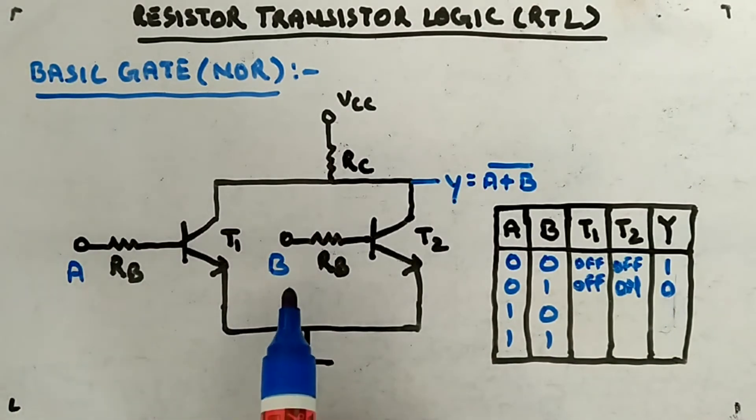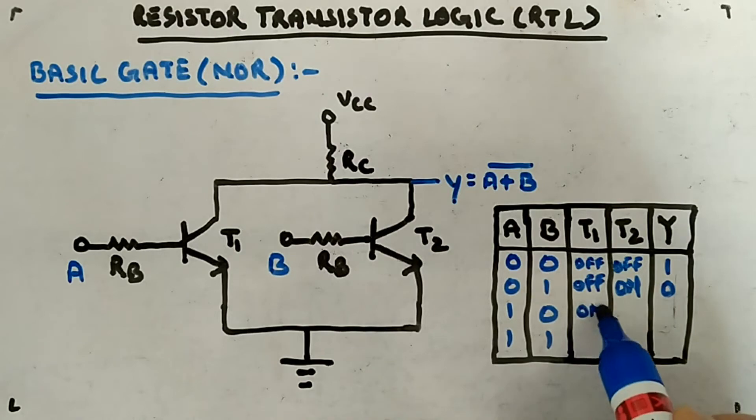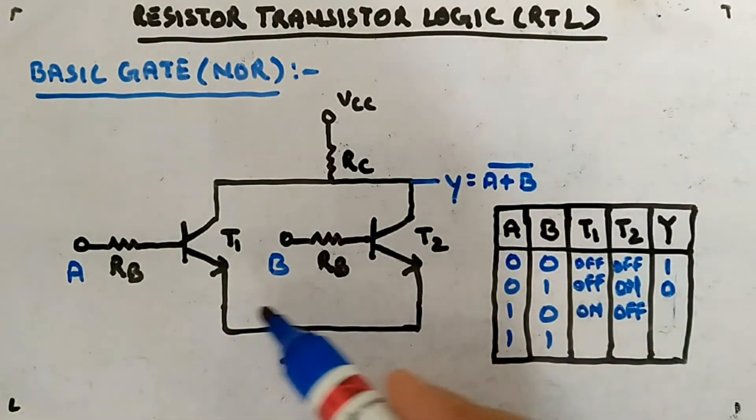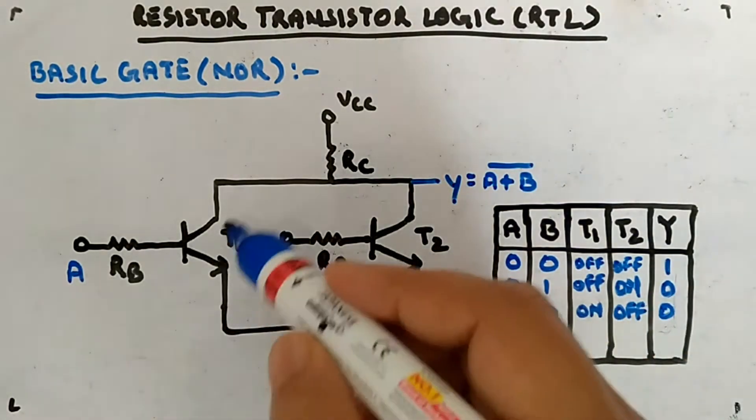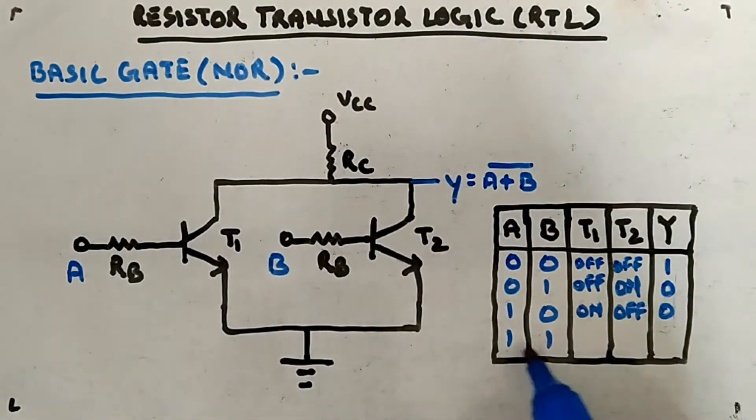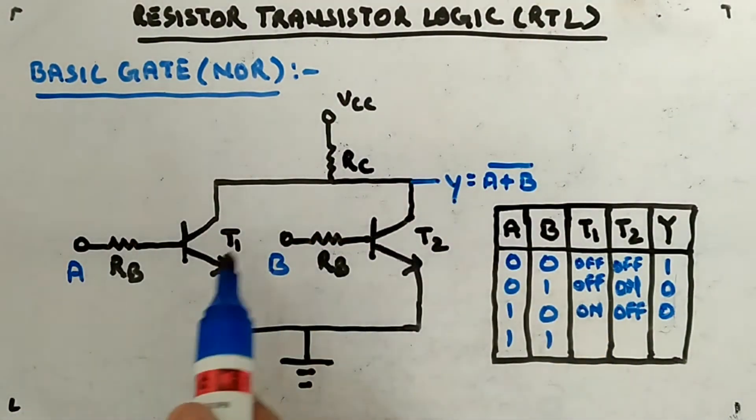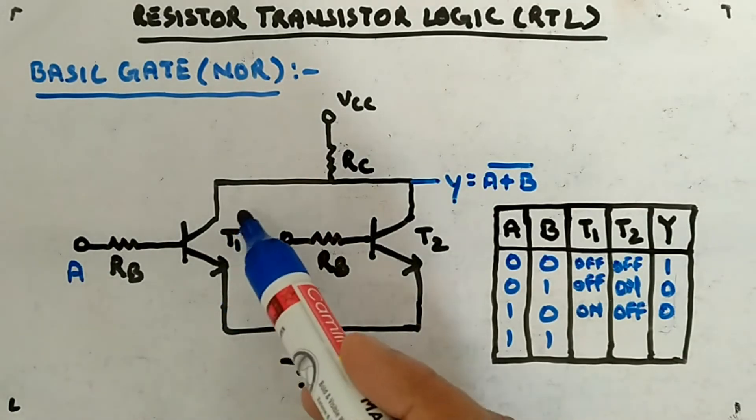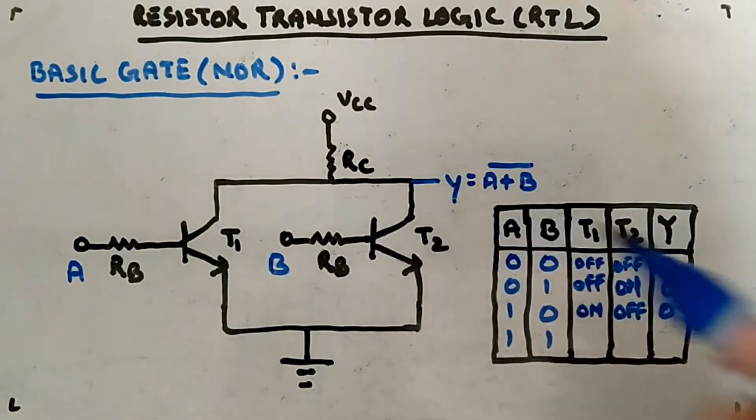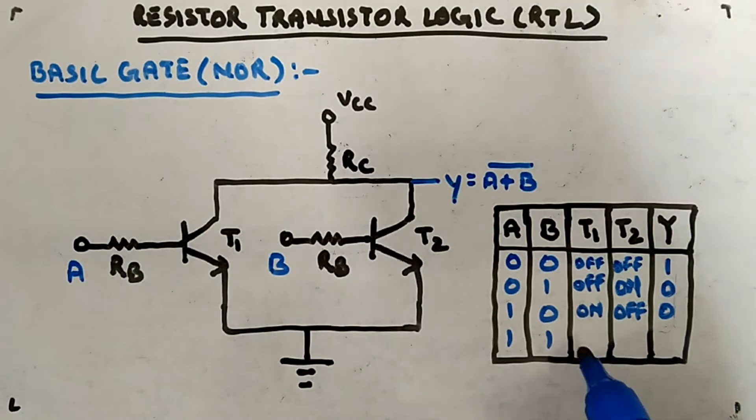Same thing if you apply one here and zero here - this guy will be on and this guy will be off. The output will be again zero. If you apply both one-one, both will be in saturation, meaning there will be a connection like this and this, so directly output will be connected to ground.